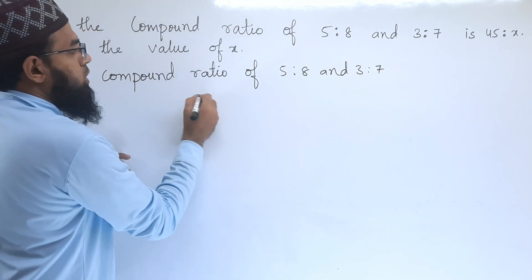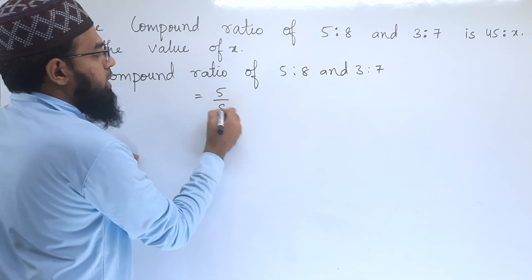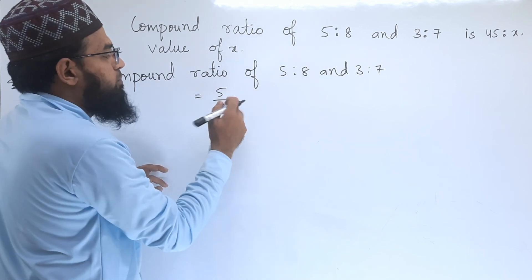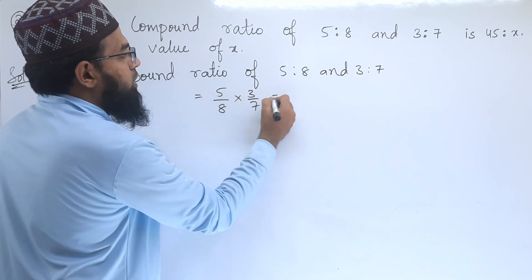We can write this as 5/8 times 3/7, which equals 15/56 (5×3 is 15, 8×7 is 56).